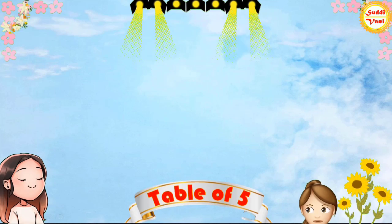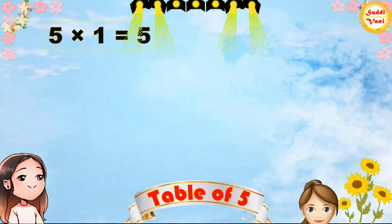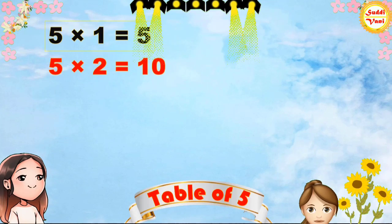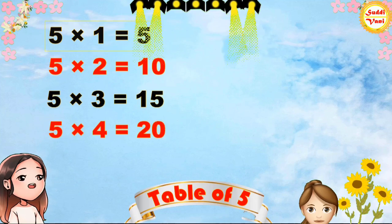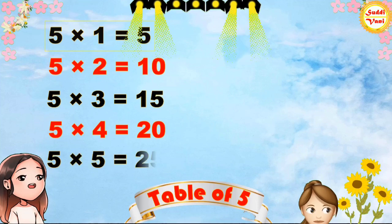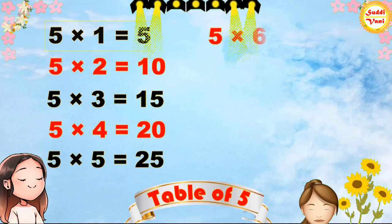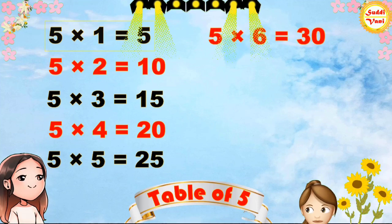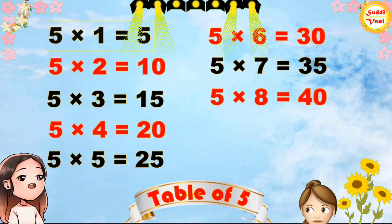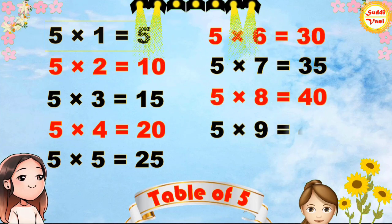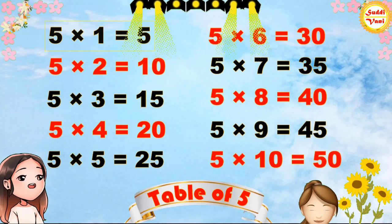Once again: 5×1=5, 5×2=10, 5×3=15, 5×4=20, 5×5=25, 5×6=30, 5×7=35, 5×8=40, 5×9=45, 5×10=50.